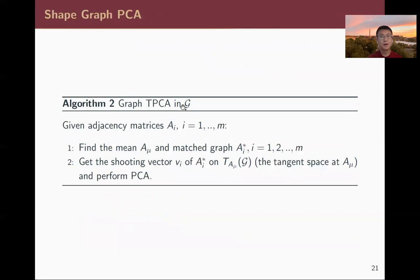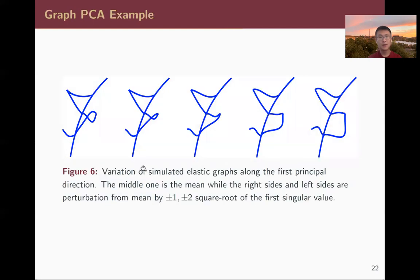We can also build graph PCA. Given M graphical shapes, we first find their Fréchet mean, then match the graphs. Since each edge is registered, we get a shooting vector for every edge in the tangent space of its mean edge. The collection of all these shooting vectors forms the shooting vector for the matched graph shape. This shooting vector lies in the tangent space, which is a vector space, so we can perform standard PCA. Here are some PCA results.